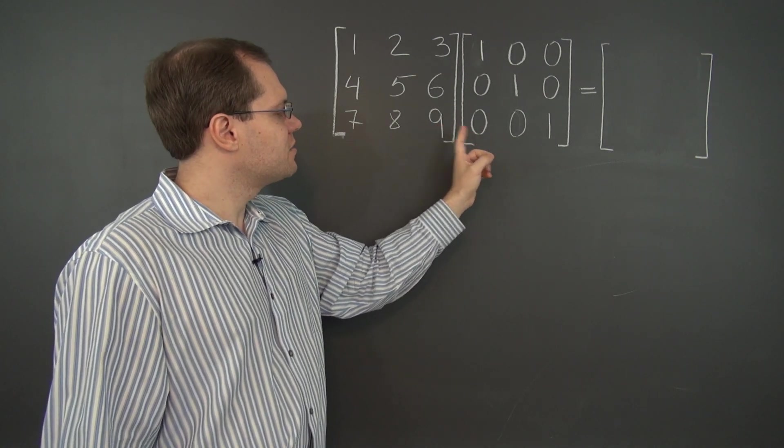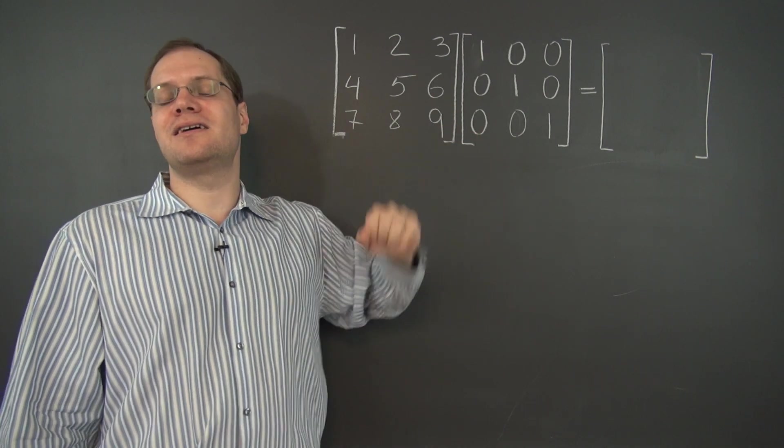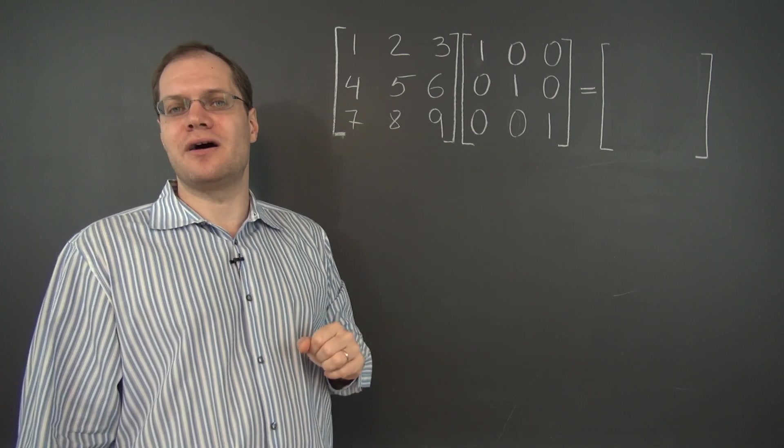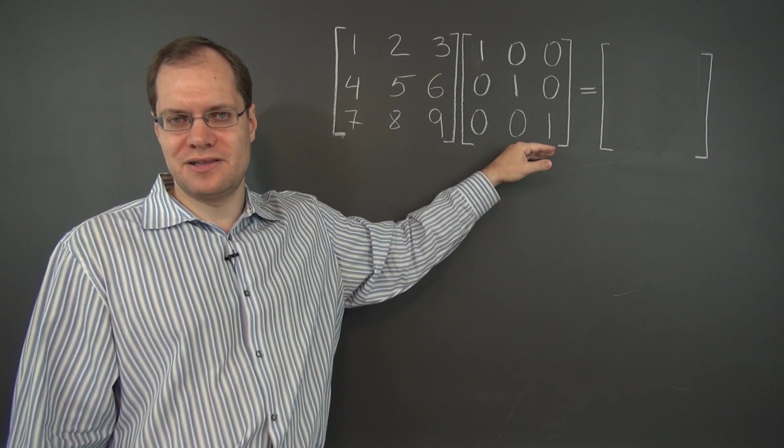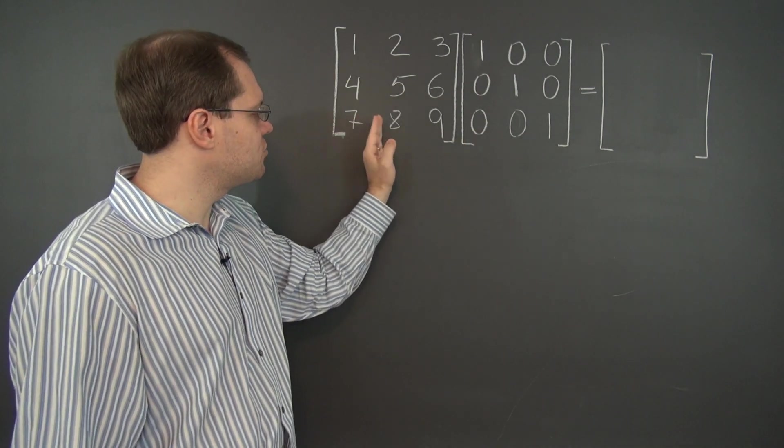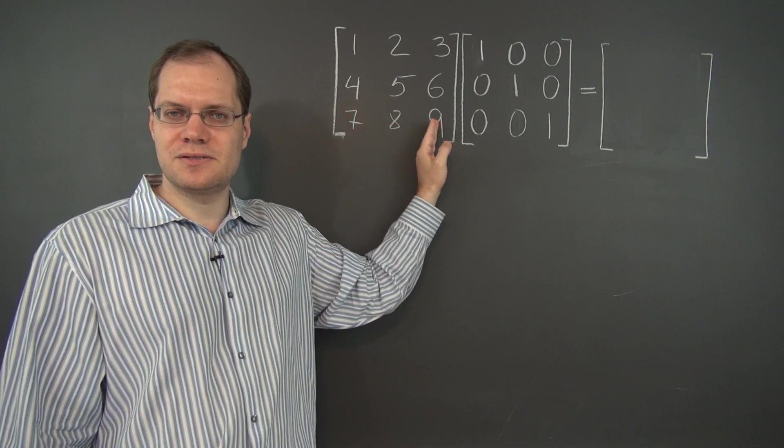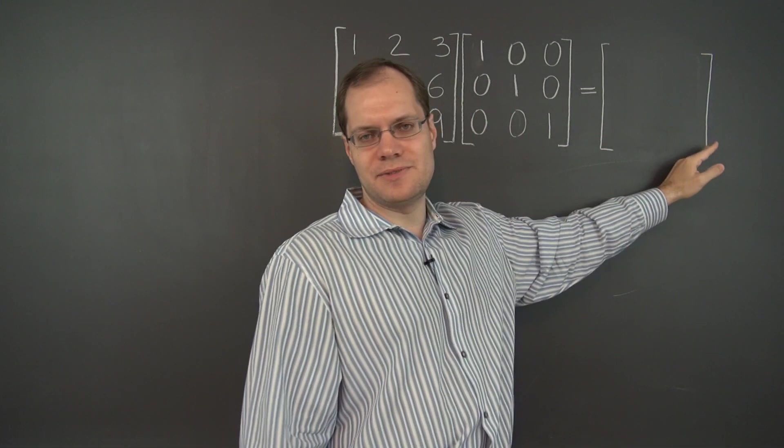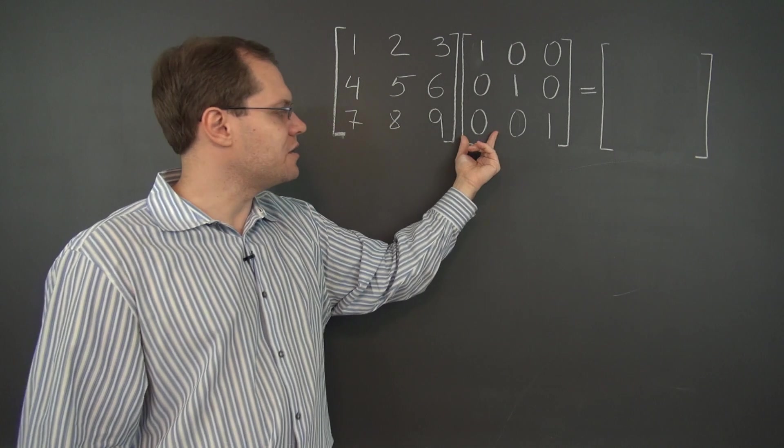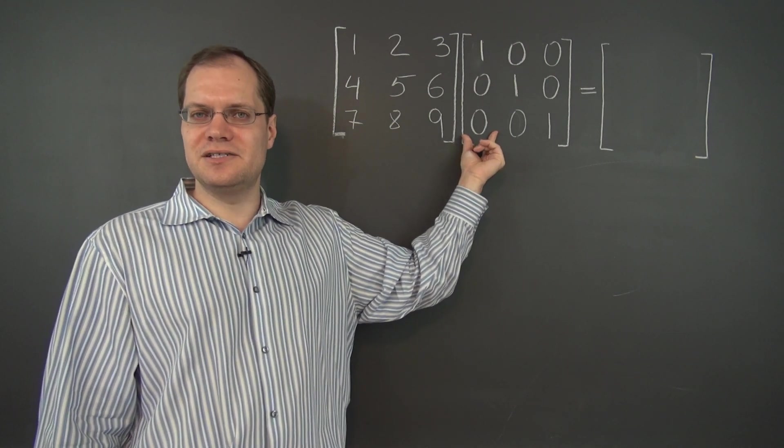So multiplying, carrying out this multiplication, let's take the column perspective on this product. It's the better perspective in this case. We're going to find three linear combinations of these columns, and those will be the three columns of the answer. And the coefficients will come from the columns of this matrix.